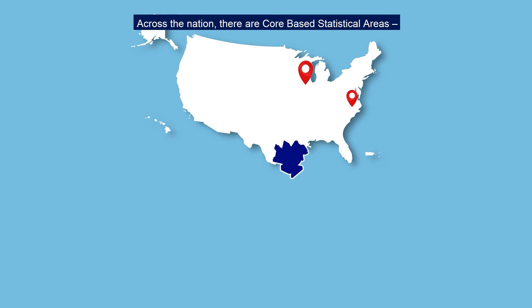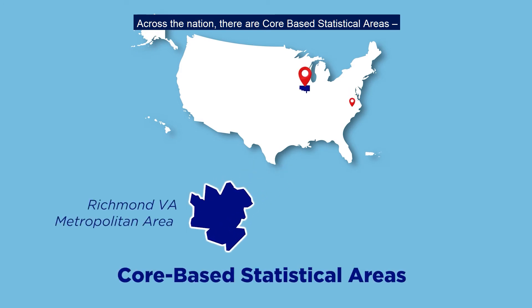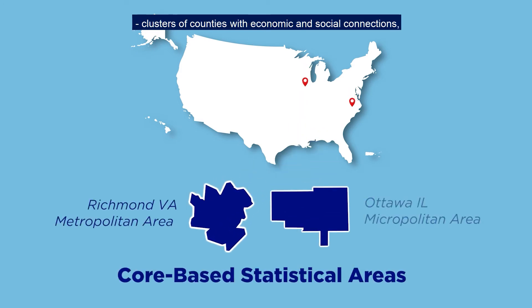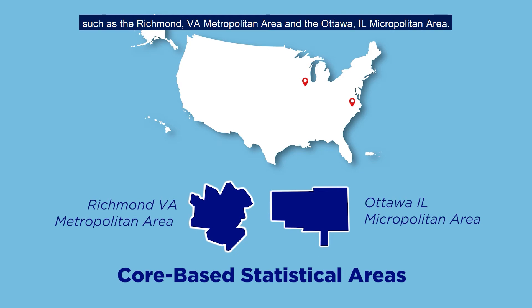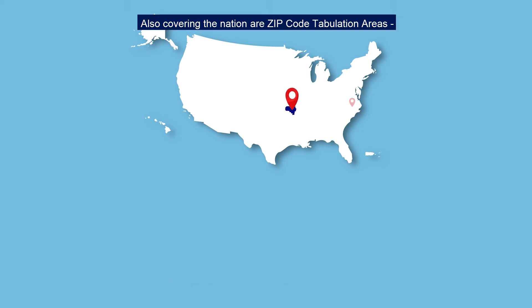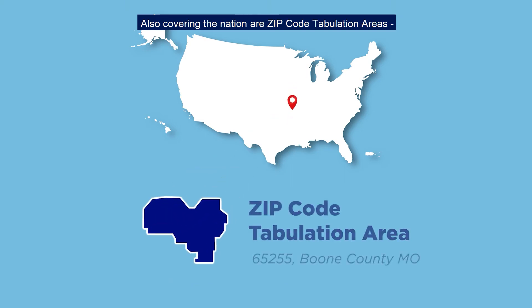Across the nation, there are core-based statistical areas — clusters of counties with economic and social connections, such as the Richmond-Virginia metropolitan area and the Ottawa-Illinois micropolitan area. Also covering the nation are zip code tabulation areas, spatial representations of U.S. Postal Service zip codes.